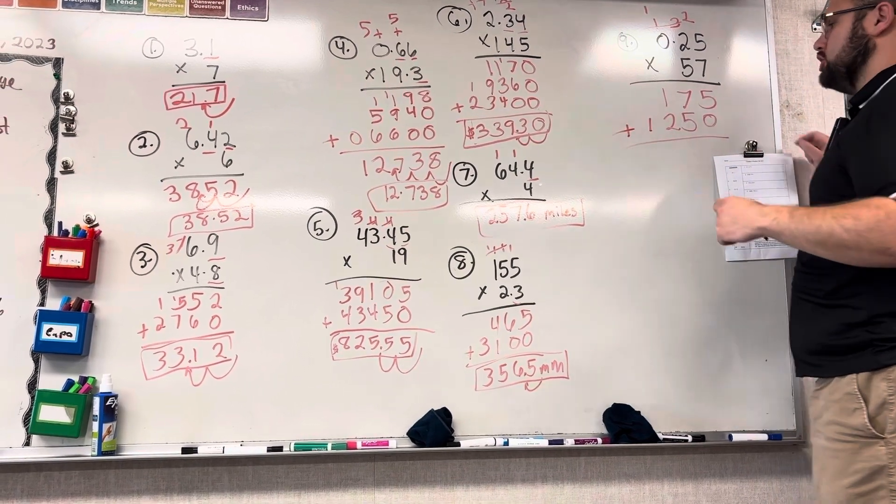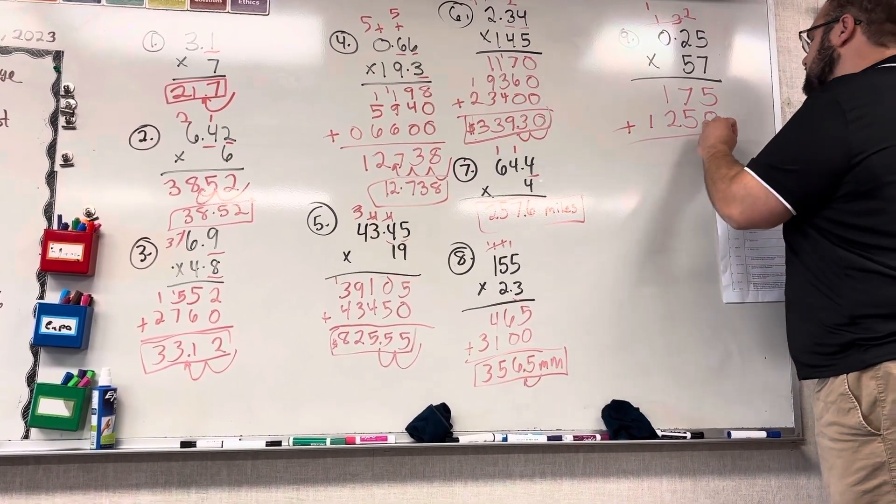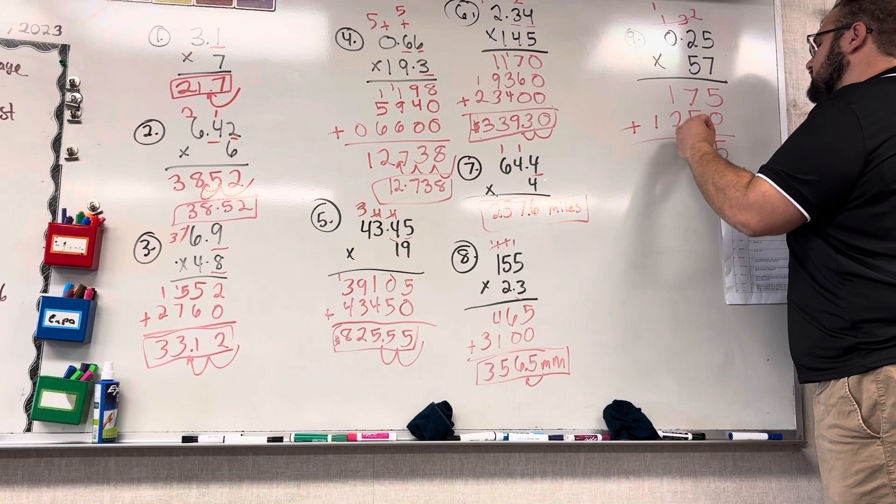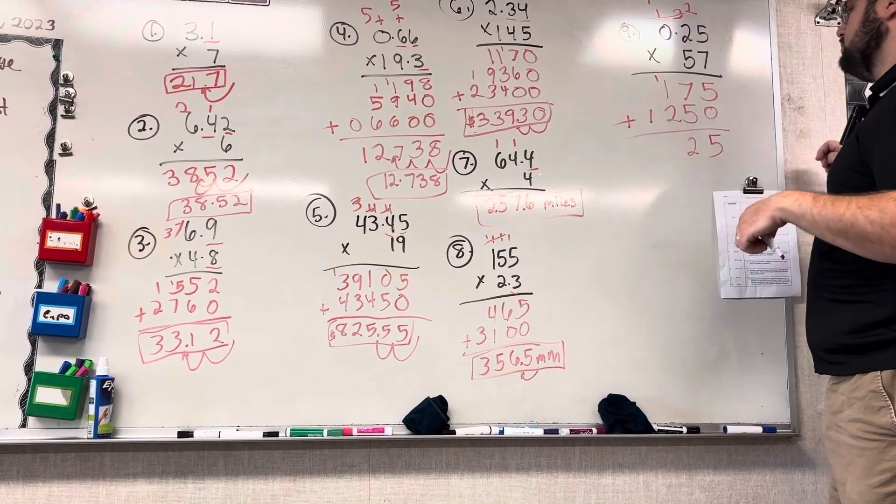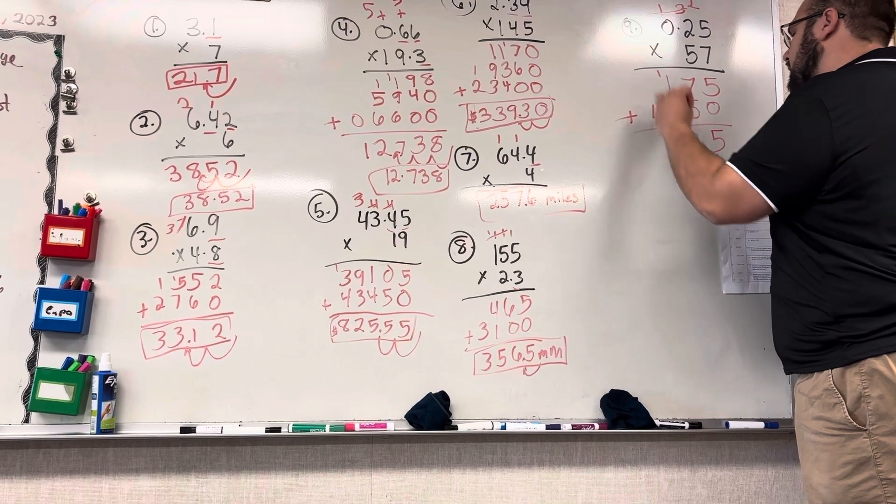Now we're going to add our partial products. 5 plus 0 is 5. 7 plus 5 is 12. So, 1 plus 1 is 2, 2 plus 2 is 4, and 1 plus 0 is 1.